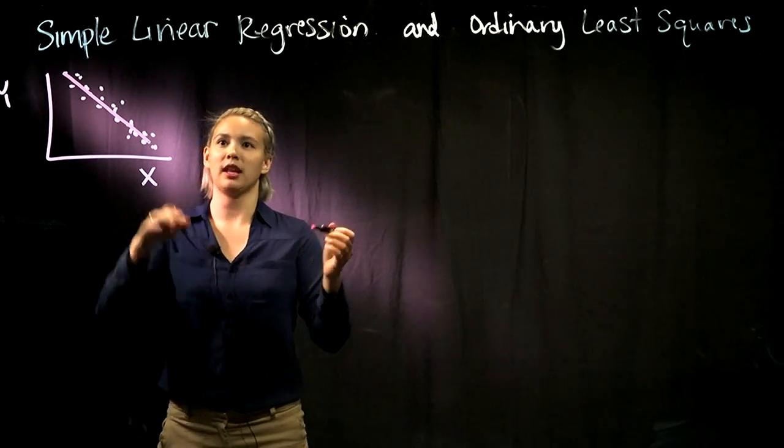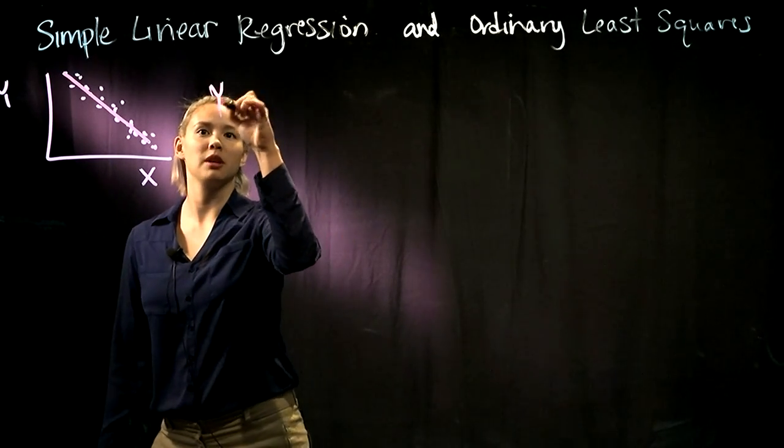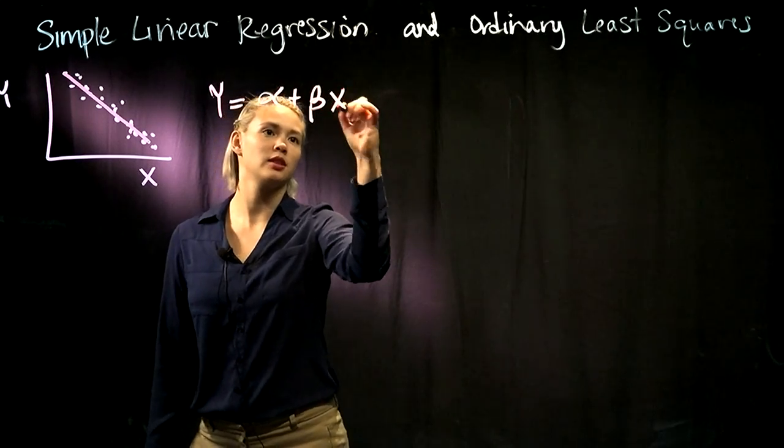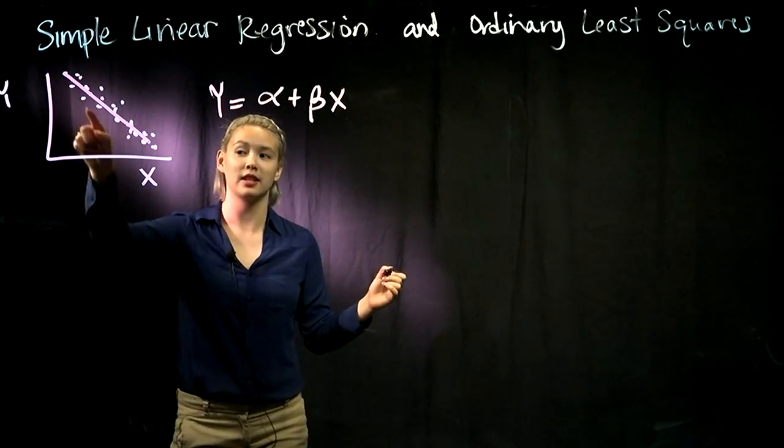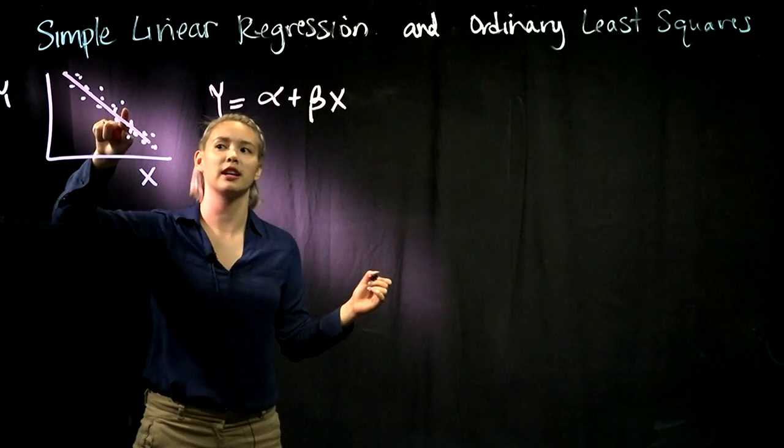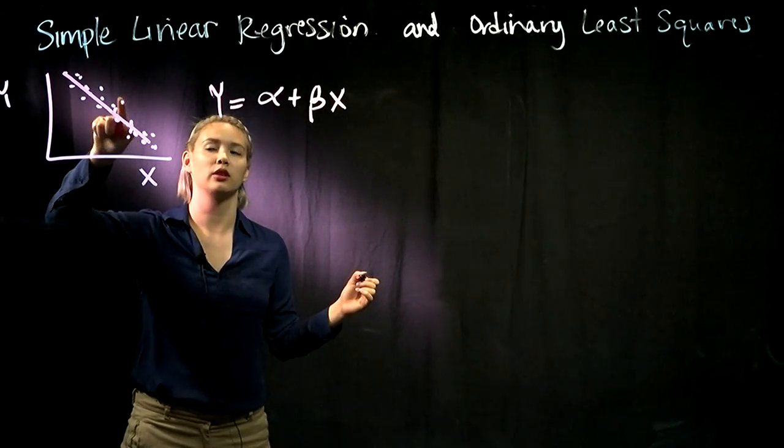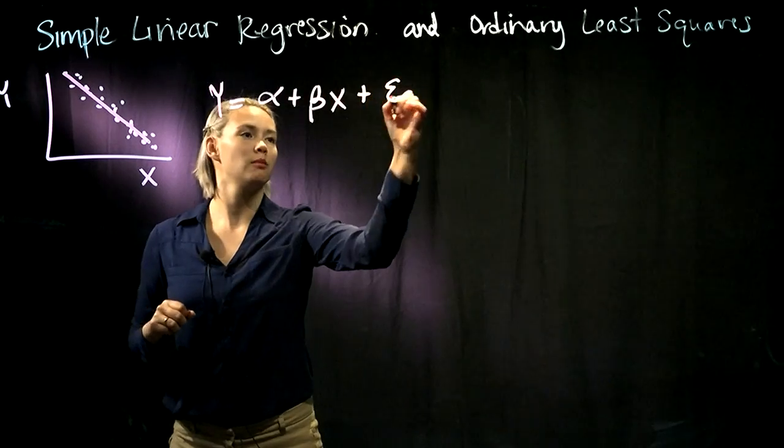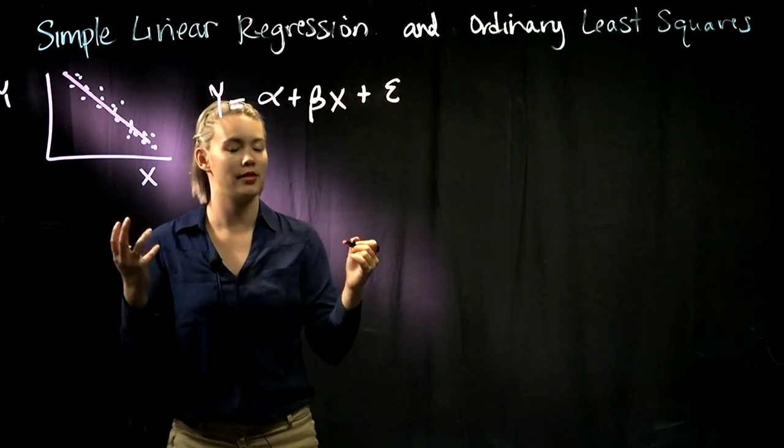Since we have a line, we know that the equation is going to be y equals intercept plus slope times our predictor. But that's the equation for the line. If we're trying to predict these values, then we need to add in that error term because these points don't perfectly fall on that line.